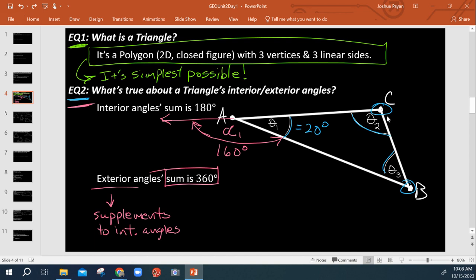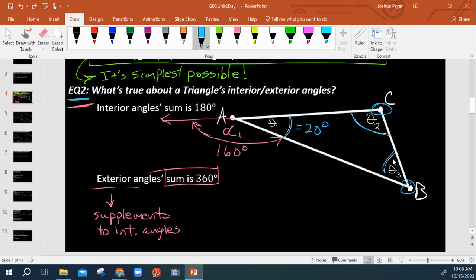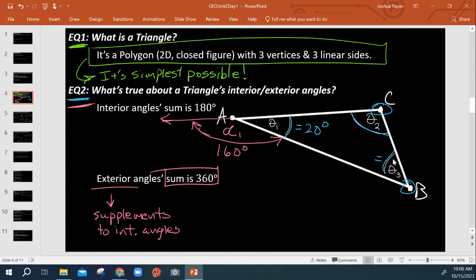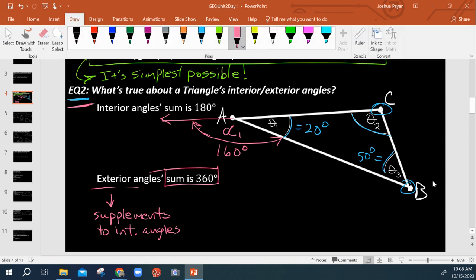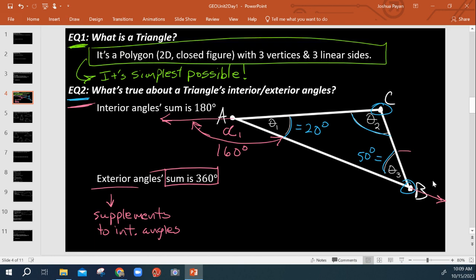And if I go on to say theta 3, let's say theta 3 is equal to 50 degrees. Well, what then does the exterior angle have to be? So if I just continue on out this way, 50, that means this guy, from here to here, we're going to call it alpha 2. This angle, the exterior angle, alpha 2, is going to have to be equal to 130 degrees. Again, because 130 plus 50 gives me 180, and is therefore the supplement to the interior angle of 50 degrees.